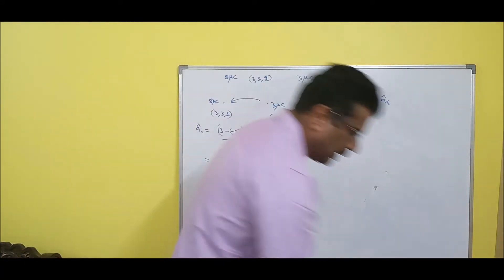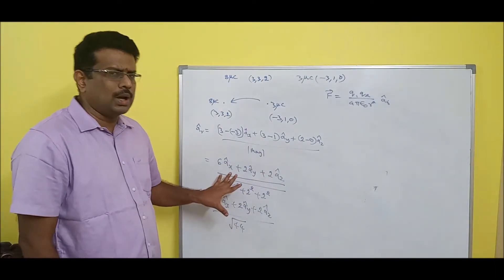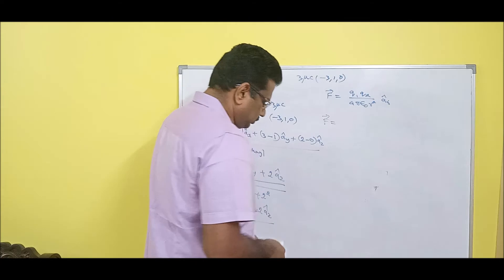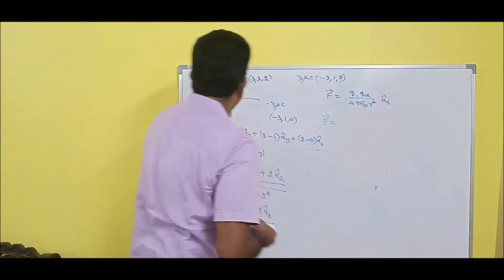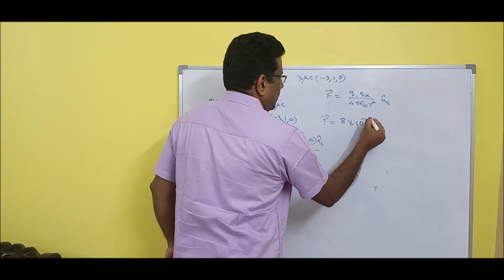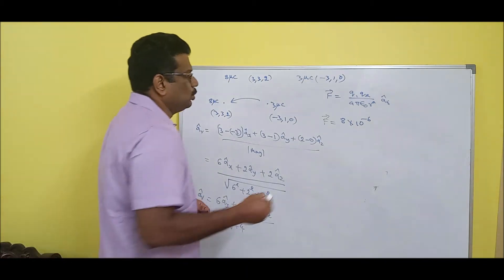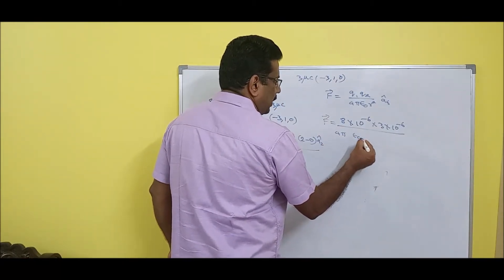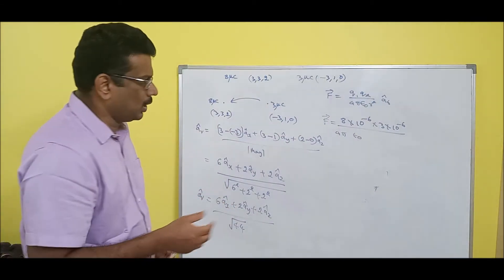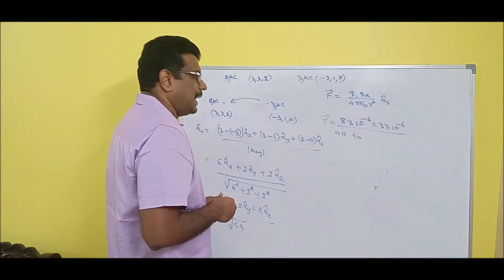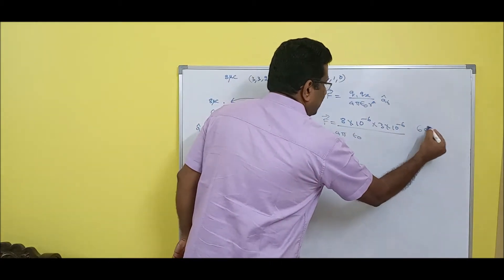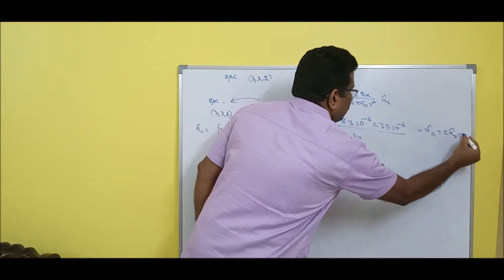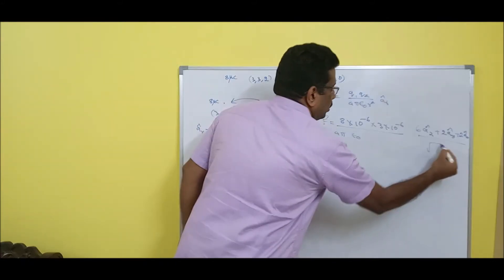Now let us enter into the formula. This ar cap is just the preliminary work. What is Q1? 8 micro = 8×10⁻⁶. What is Q2? 3×10⁻⁶. Divided by 4·pi, and epsilon₀ = 8.8×10⁻¹². R-square — we will decide later. And ar cap is (6 ax cap + 2 ay cap + 2 az cap) divided by root of 44.